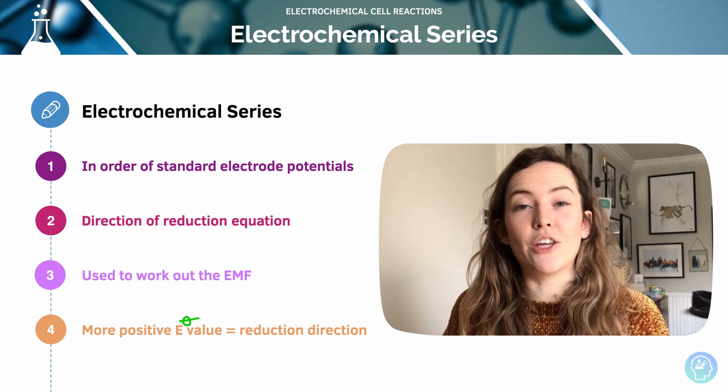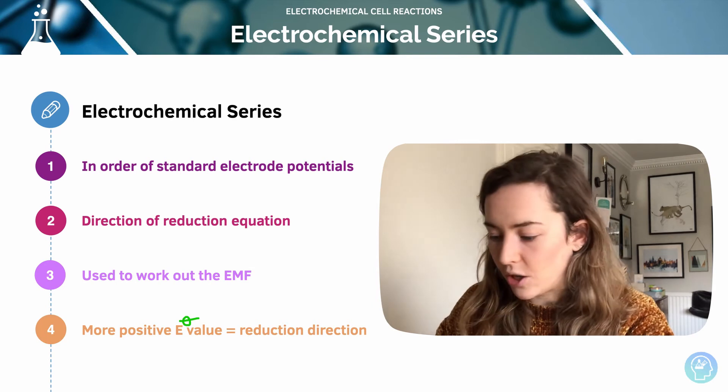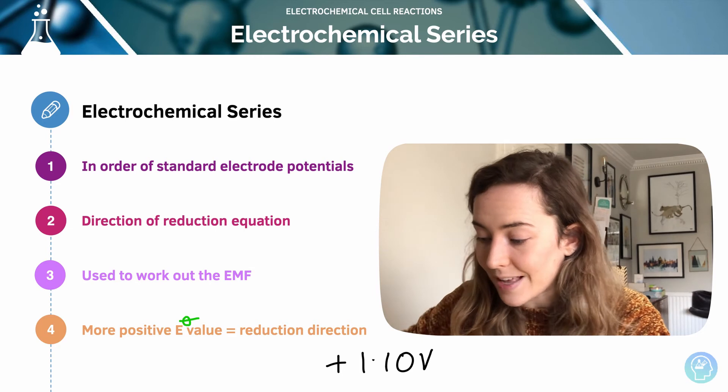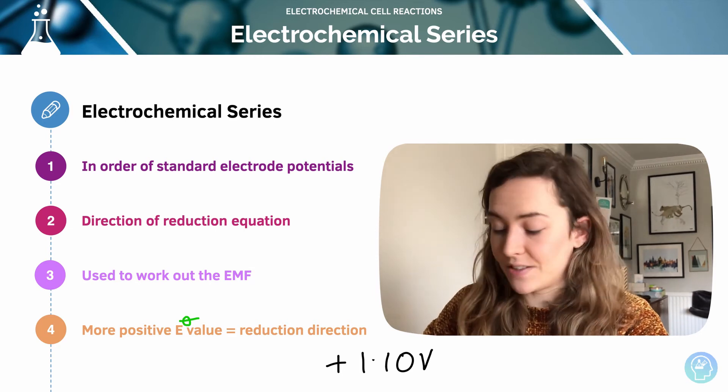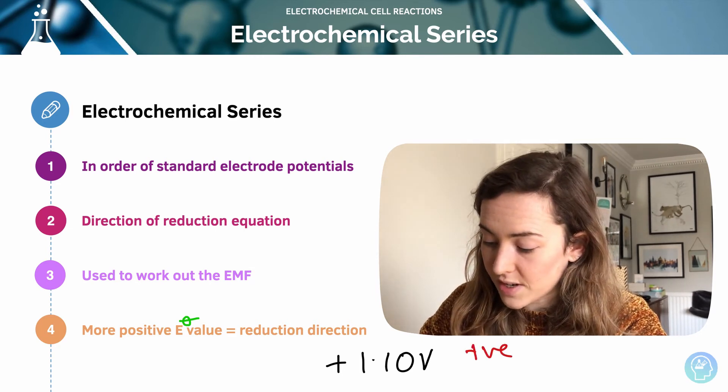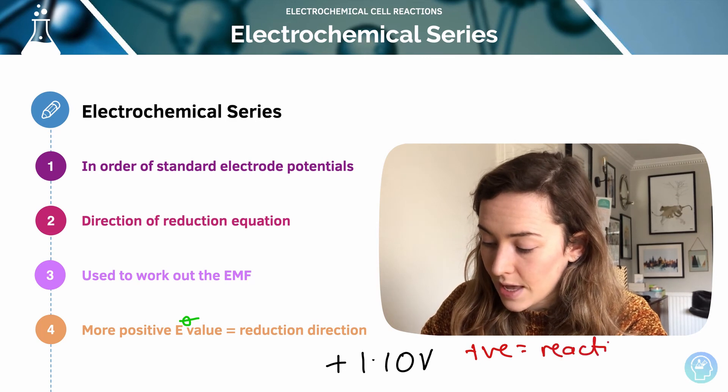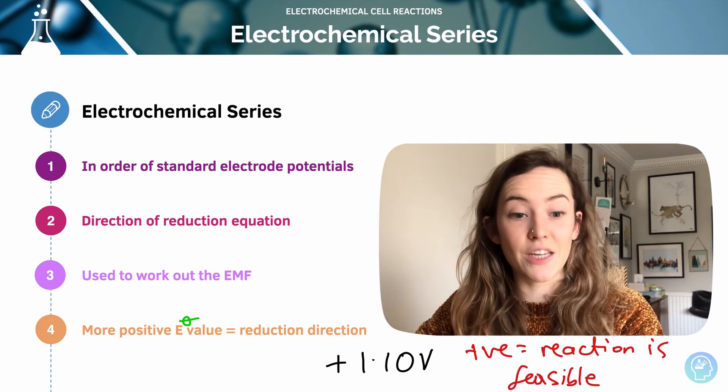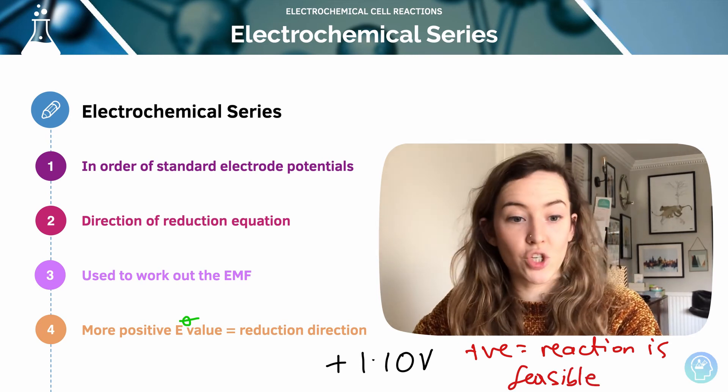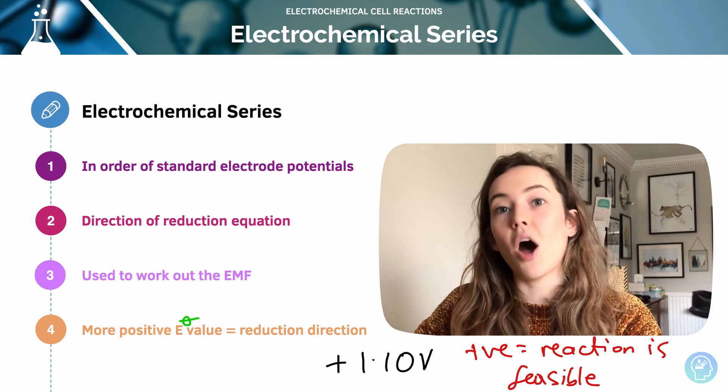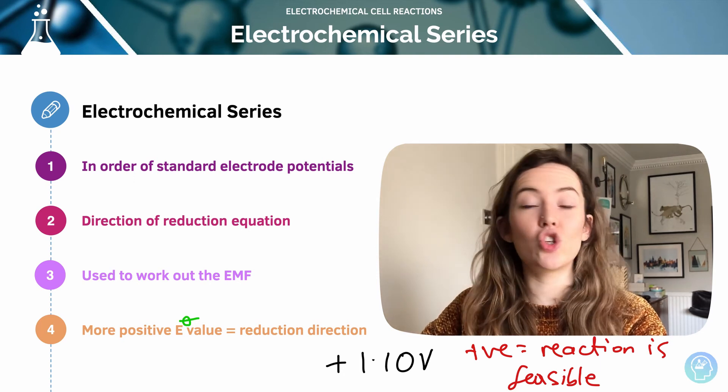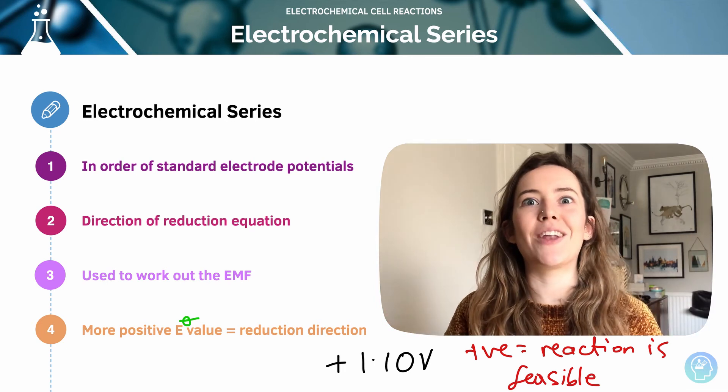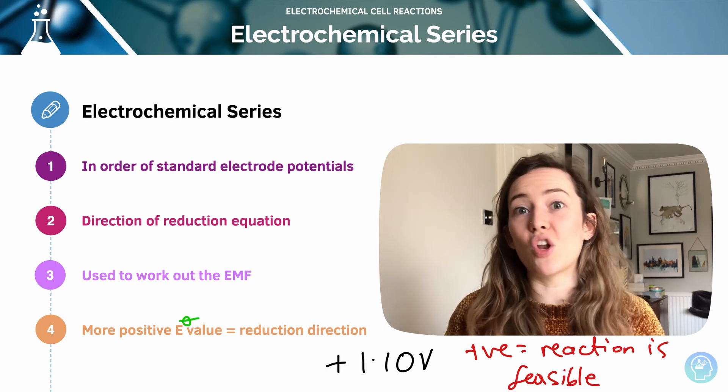If you do your calculation and the EMF comes out as a positive value, like in the question before the EMF came out as +1.10 volts, that's positive. That indicates that the reaction is feasible. So positive means reaction is feasible in the directions indicated by the respective half equations. The prediction is only right, though, under standard conditions. As soon as you change the temperature, pressure or concentration of anything in that half cell away from the standard conditions we learned in the previous lesson, these rules no longer apply.